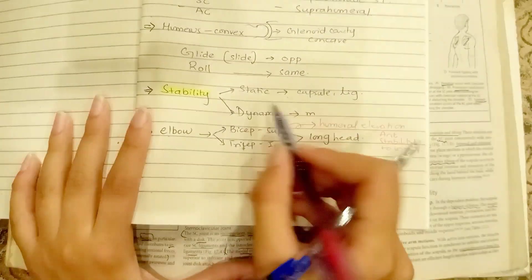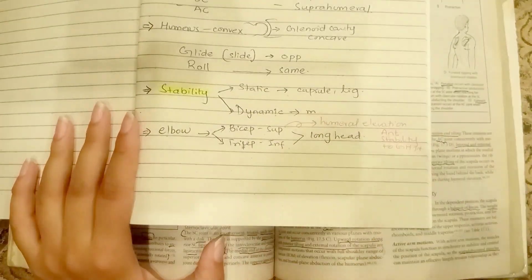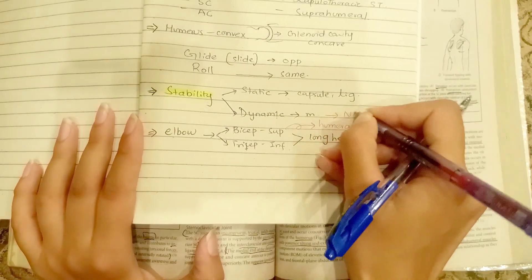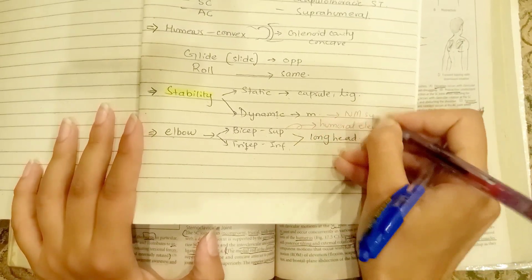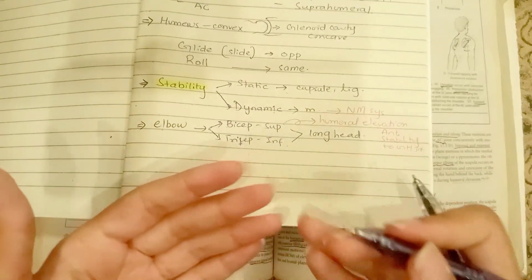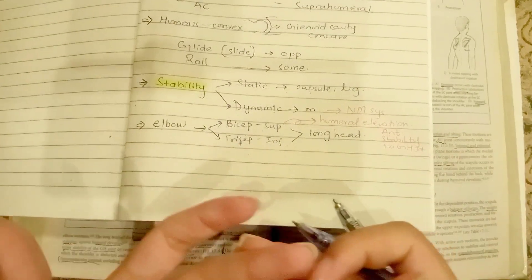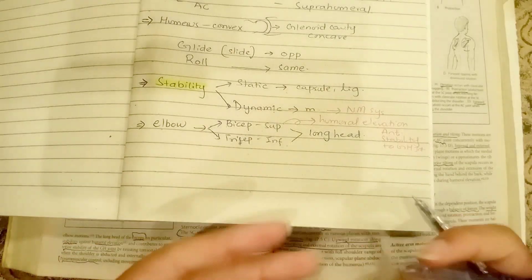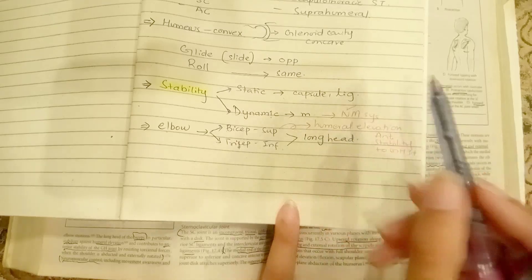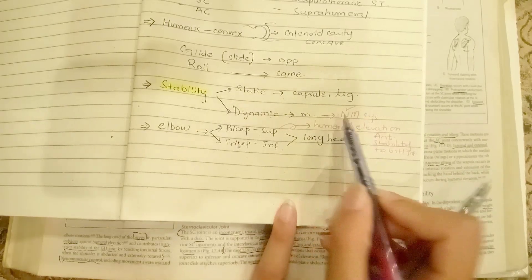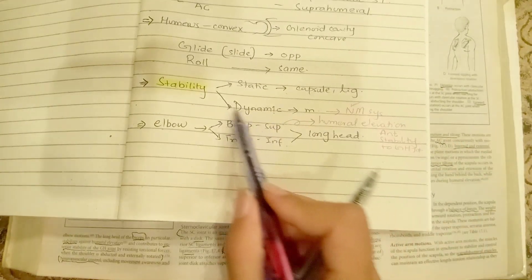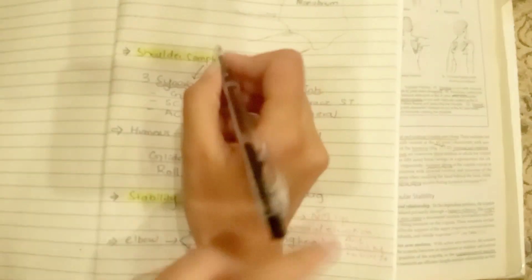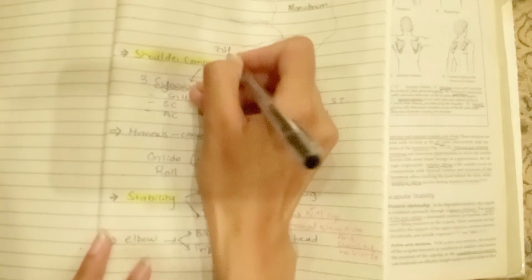The dynamic structures providing stability to the GH joint are coordinated by the neuromuscular system. As we know, muscles are controlled by neurons — both the contraction and relaxation timing of muscles are controlled by neurons. So we can say the neuromuscular structures as a whole contribute to dynamic stability. That covers everything about the GH joint.